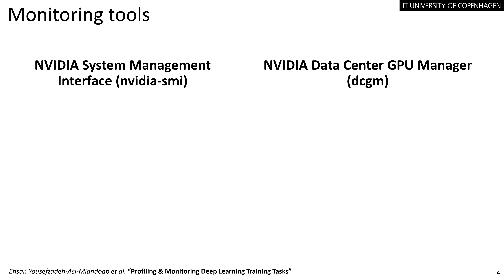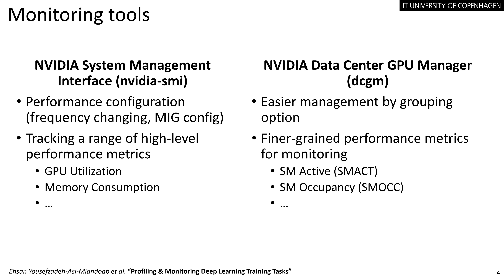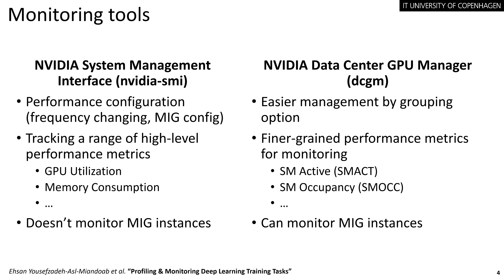For monitoring tools for NVIDIA GPUs, we have NVIDIA System Management Interface (NVIDIA SMI) and NVIDIA Data Center GPU Manager (DCGM). NVIDIA SMI is usually used for performance configuration purposes like changing the working frequency and configuring MIG instances. DCGM also enables configuration and provides additional options like grouping. NVIDIA SMI tracks high-level metrics like GPU utilization and memory consumption, whereas DCGM allows tracking finer-grained metrics like SM active and SM occupancy. The downside of NVIDIA SMI is that it cannot monitor MIG instances, but DCGM can.